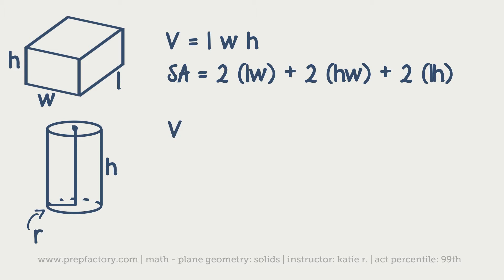For cylinders, the volume uses the same basic idea: take the area of the base and multiply by the height. Since the base is a circle, the area is πr², so volume = πr² times the height. The surface area is a bit more complicated, but the same basic idea applies. The top and bottom are both circles, so you start with 2πr².